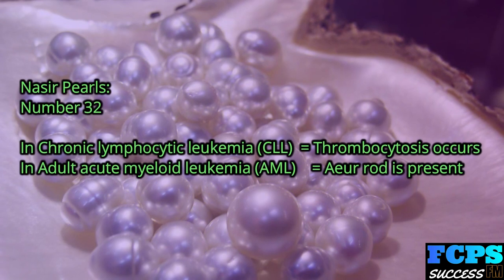Nasir Pearl number 32: In chronic lymphocytic leukemia (CLL), thrombocytosis occurs. In adult acute myeloid leukemia (AML), Auer rods are present.